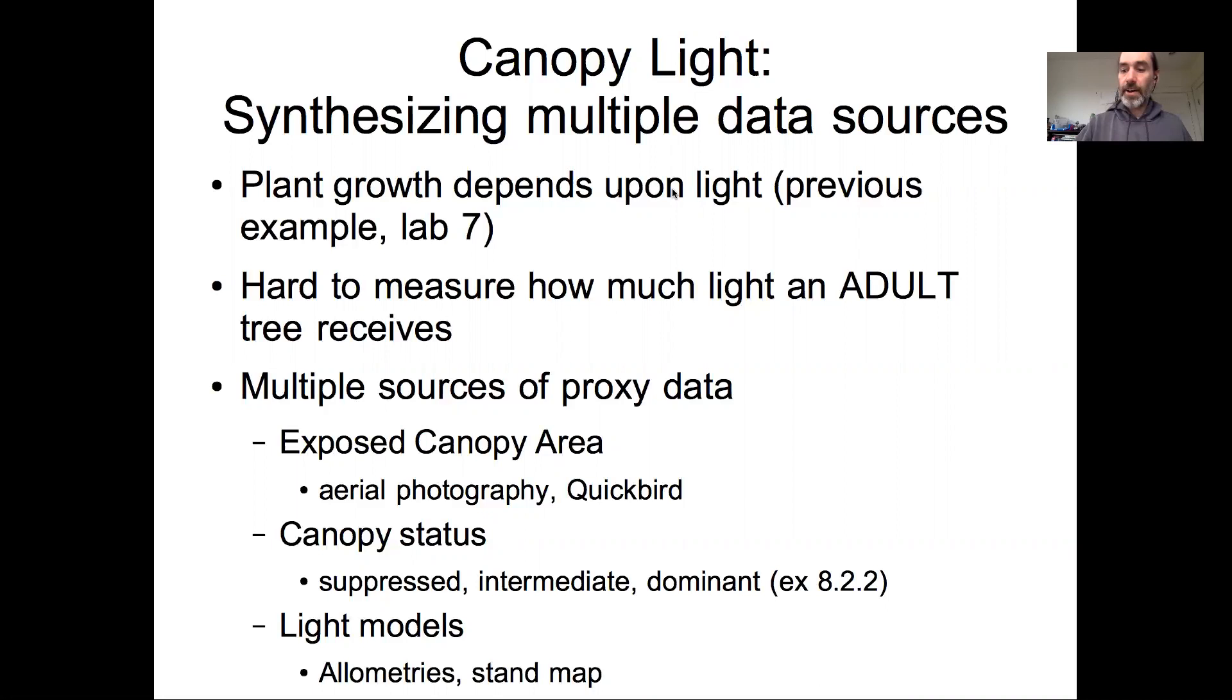In this last example of combining hierarchical models with nonlinear models, I want to come back to an example that I started at the very beginning of this semester. In this particular example, I want to focus on the idea of using hierarchical nonlinear models to combine multiple sources of data. In this case, we're going to combine multiple sources of data to estimate the canopy light environment.